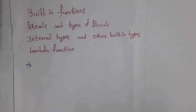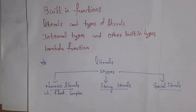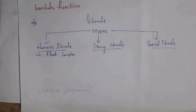Let's get started. First, I will explain literals and types of literals. Any value which we give to a variable is known as a literal. Literals are classified into three types: numeric literals, string literals, and special literals.